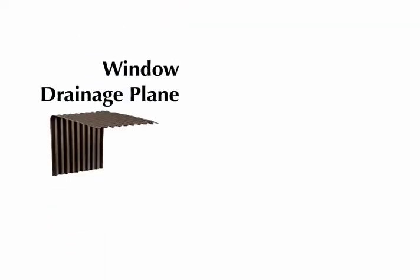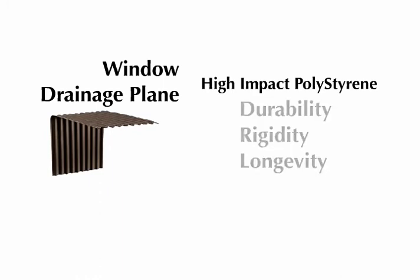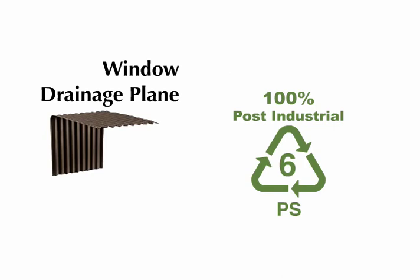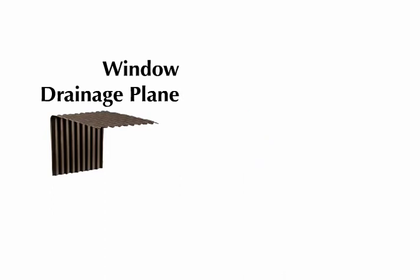Window Drainage Plane is made of high-impact polystyrene, which ensures durability, rigidity, and longevity. This is a 100% post-industrial recycled plastic, which gives Window Drainage Plane a positive environmental impact.